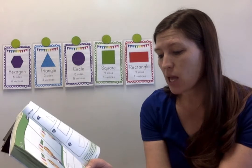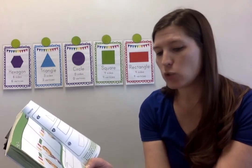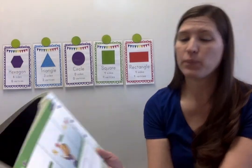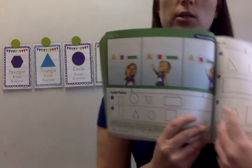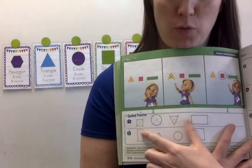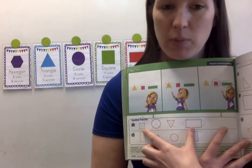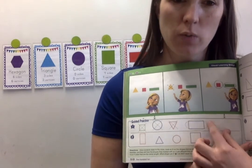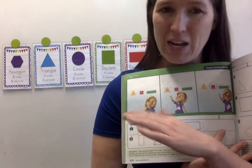So the first one it says, I have four sides. I do not have four sides that are the same length. What shape am I? So if I'm looking at this one, I have four sides. That would be a square or rectangle. But the sides are not all the same. So that would be a rectangle.